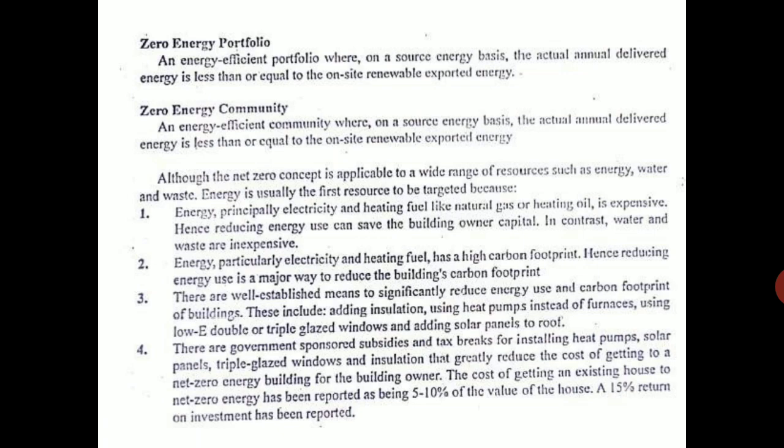Solar energy is one key technology, along with double or triple-glazed windows and building insulation. Heat pumps are used instead of furnaces, which would otherwise consume fossil fuel. Though the initial cost of the building may be slightly higher — around 5 to 10 percent — the energy consumed will be lower, so the monthly recurring bill will be less.